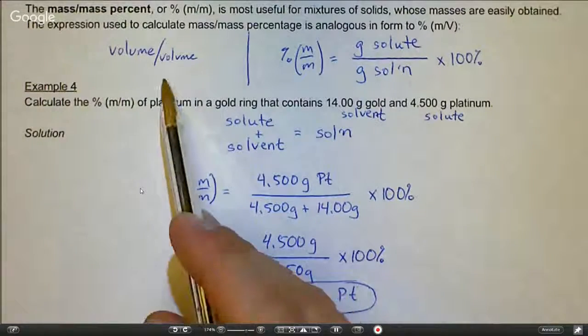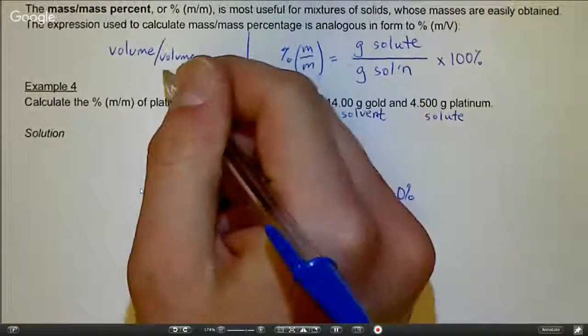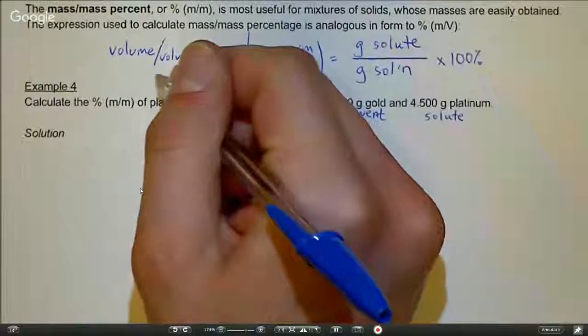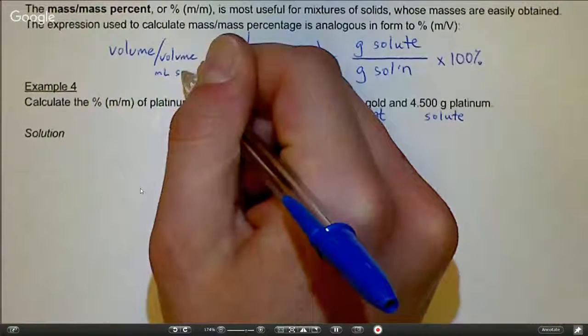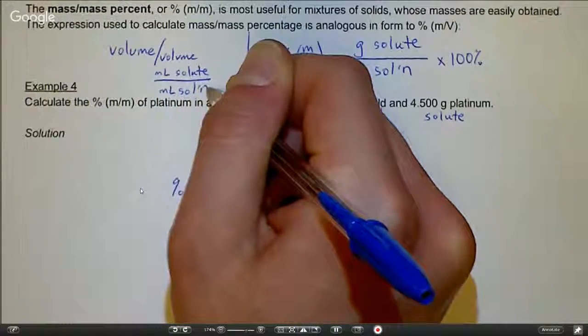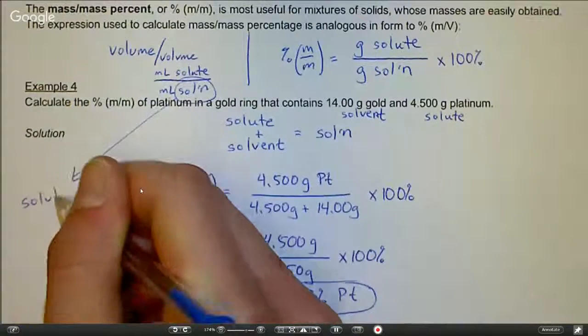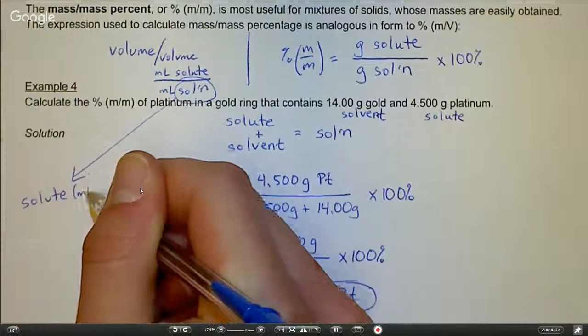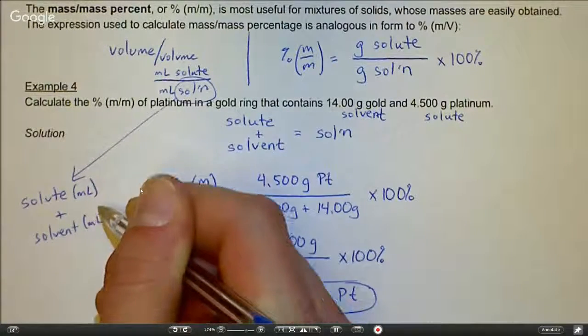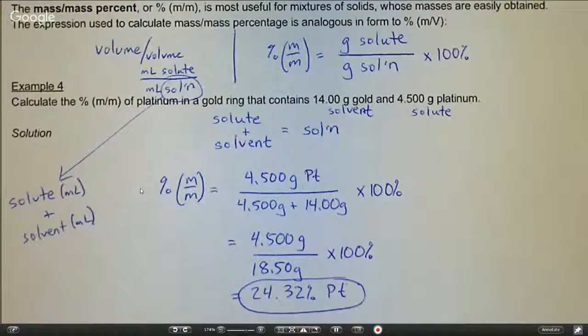With volume volume percent, it would be very similar, but in that case you would have your volume, whether it's milliliters or liters—you just have to be consistent—to say it's milliliters of solute over milliliters of solution. Realize that this solution is going to be the solute in milliliters plus the solvent in milliliters. Again, if you had it in liters, just make sure that both are in the same unit to be consistent.